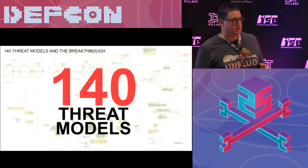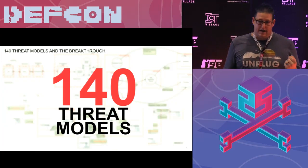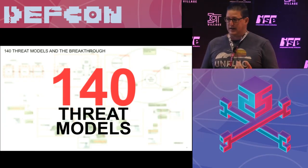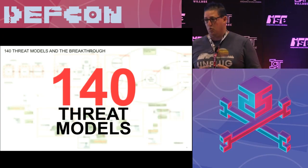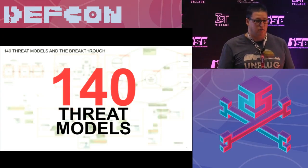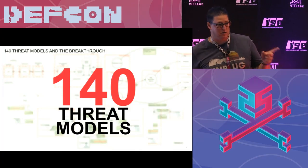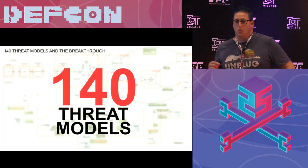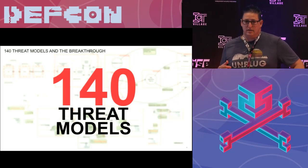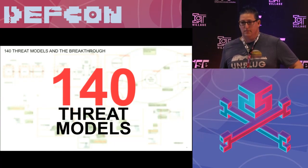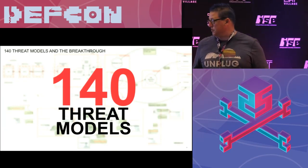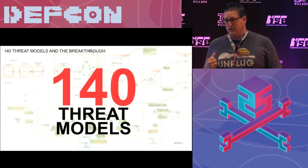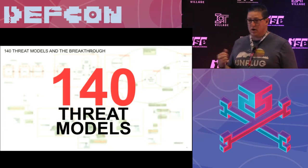I grabbed a ream of paper and sat on my floor and drew out a threat model for every single device I had ever attacked, defended, or worked on, or anything I had ever seen other researchers work on. I started thinking: what would we need to do to design this so that the minute an attack happens — whether on the app, the user, or the server — I can recover regardless of what that attack is? I revoke it because I'm in control, and now I'm recovered. It literally is a one-second revoke.